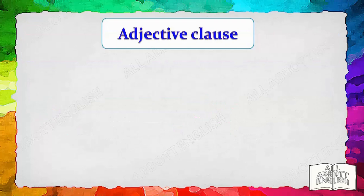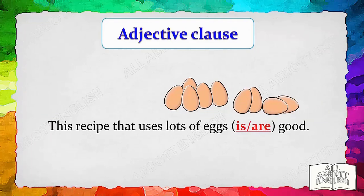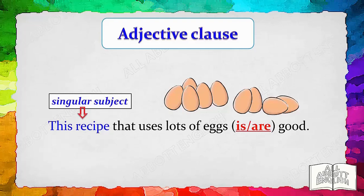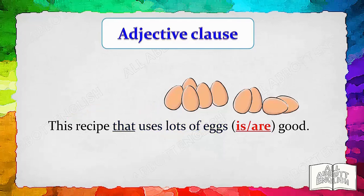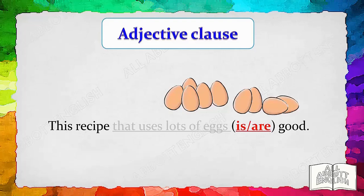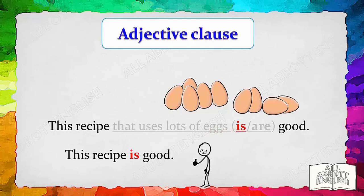Here is another example. First, let's identify the subject: 'this recipe' is the subject. 'That uses lots of eggs' provides a description of this recipe — it is therefore an adjective clause beginning with the relative pronoun 'that.' Once you have identified the clause, you can manually remove it. Then it is easier to match the singular subject 'this recipe' with a singular verb. This recipe is good.